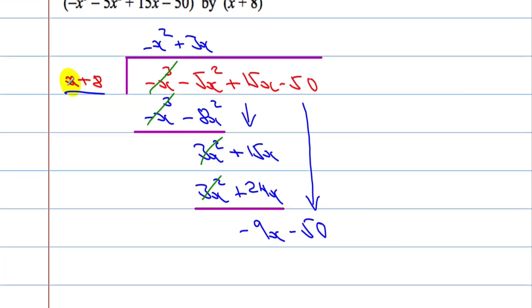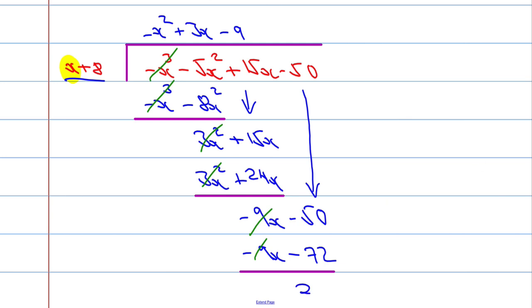x into negative 9x goes minus 9 times. So you get minus 9x, and minus 9 times 8 is minus 72. Taking the expressions away from each other — bottom from the top — these cancel out. I've got negative 50 and I'm taking away negative 72, which gives me positive 22. So the quotient is minus x squared plus 3x minus 9, and the remainder is 22. Okay, that's it for this video. Hopefully you found it useful. Back again with another one soon. All the best.